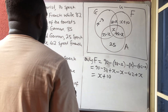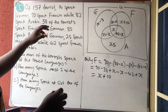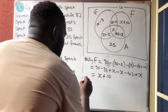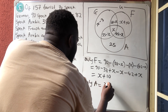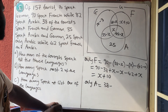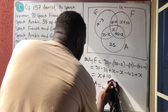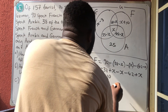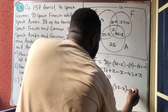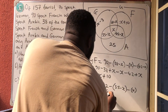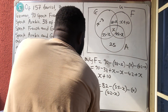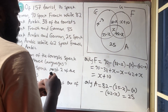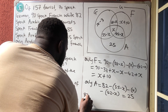Now for Arabic — they said 82 speak Arabic without 'only', so only Arabic equals 82 minus everything that entered Arabic: 82 minus (35 minus x) minus (42 minus x). They also told us that only Arabic equals 25, so we set up the equation: 82 minus (35 minus x) minus (42 minus x) equals 25.